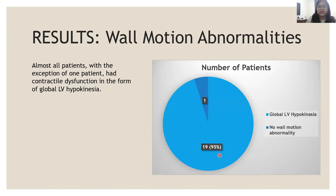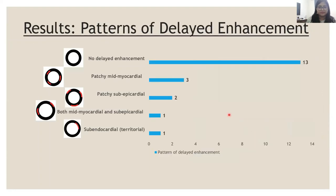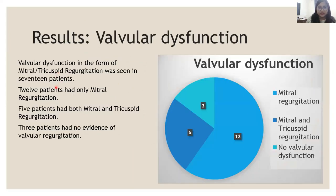95% of patients (19 patients) had wall motion abnormalities in the form of global left ventricular hypokinesia, and only 1 patient had no wall motion abnormalities. Considering patterns of delayed enhancement, 13 patients had no delayed enhancement, which is the most common pattern seen in dilated cardiomyopathy. 3 patients showed patchy mid-myocardial enhancement, 2 patients showed patchy sub-epicardial enhancement — both characteristic patterns in dilated cardiomyopathy — and 1 patient showed both patterns. Only 1 elderly female showed an unusual territorial sub-endocardial enhancement pattern. 17 patients had valvular dysfunction: 12 had only mitral regurgitation, 5 had both tricuspid and mitral regurgitation, and 3 patients had no valvular dysfunction.